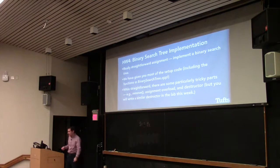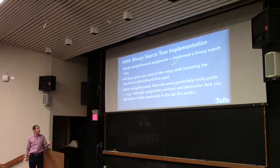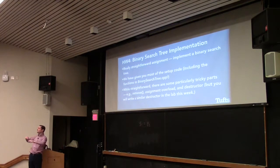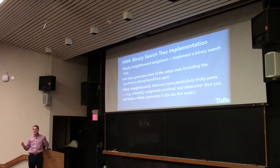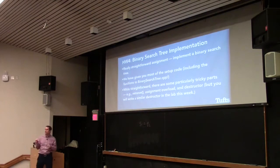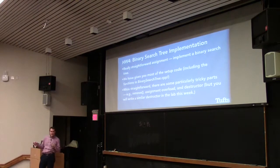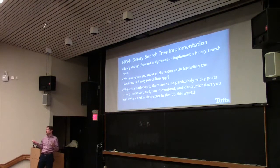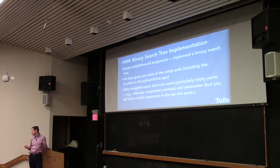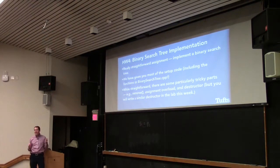Homework four is a pretty straightforward assignment — basically implement a binary search tree. The due date has been pushed to Friday, giving you about two weeks. Just don't start it late. Recursive functions are harder to debug in general. The remove function is not particularly easy — remember there are three cases: removing a leaf, removing a node with one child, and removing a node with two children. With two children it gets especially tricky — you have to find the minimum of the right child.